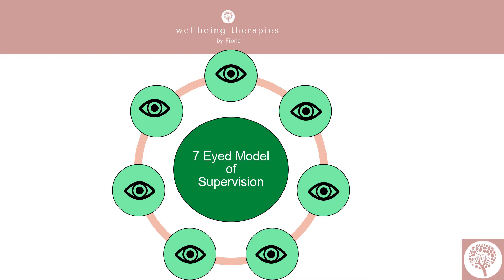Supervision is not just a quick chat about the client or reviewing the therapy offered — it's about so much more; it's about human relationships. The dynamics of the therapist and client relationship, the relationship the therapist has with themselves, and the relationship with the supervisor all offer different perspectives on the therapy being provided. This process doesn't just happen by accident — it takes practice. One of the key cornerstones of making this process work effectively is called reflective practice, which we're going to cover now.